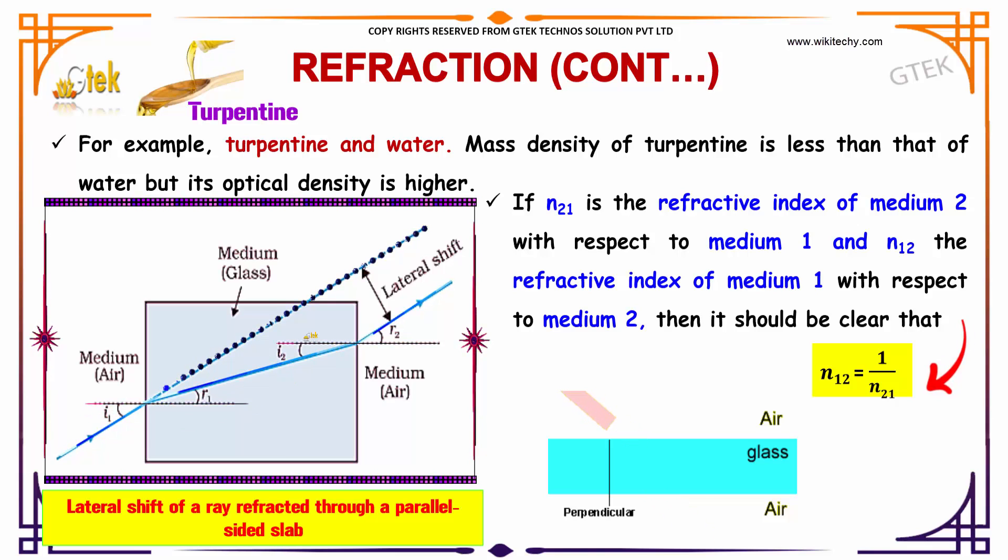This is a slab. If n21 is the refractive index of medium 2, and n12 is the refractive index of medium 1, this can be medium 1 and this can be medium 2. With respect to medium 2, then n12 is equal to 1 divided by n21.